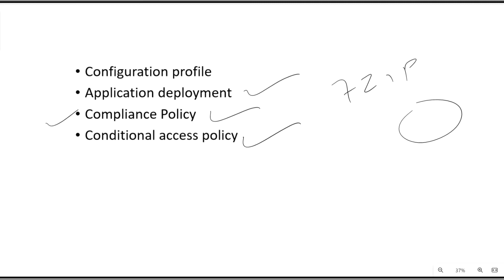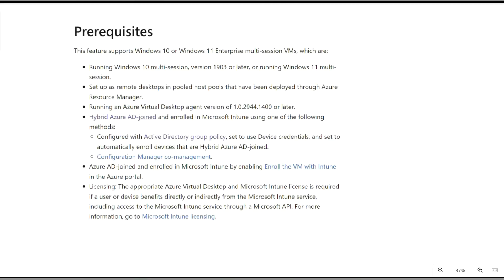At last, we have conditional access policies. Conditional access policies allow you to apply a policy based on a condition — for example, if the session hosts are non-compliant, users should not be able to connect to any Office 365 applications. You can define conditional policies accordingly so that your environment remains safe and secure.